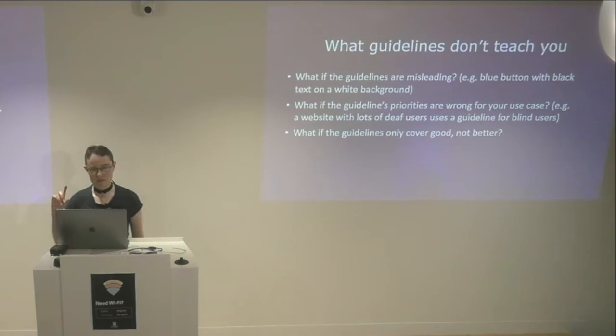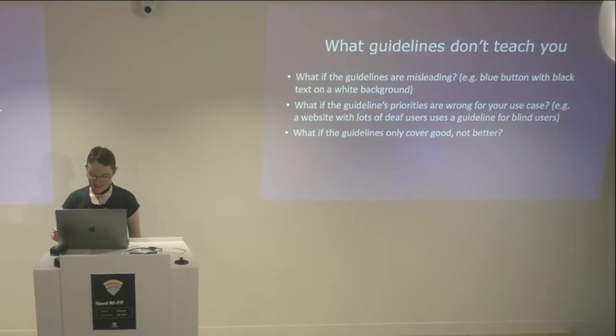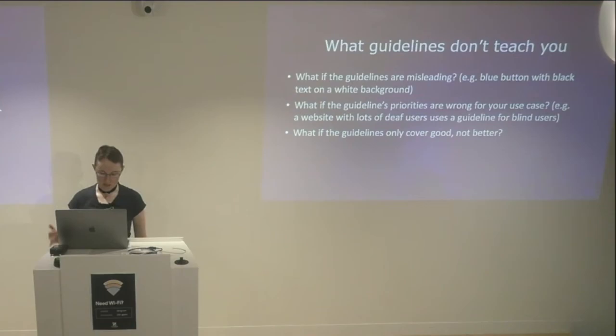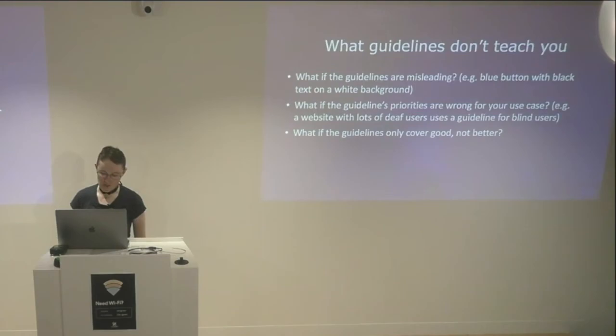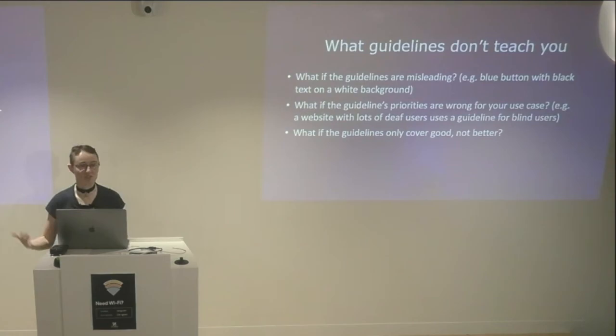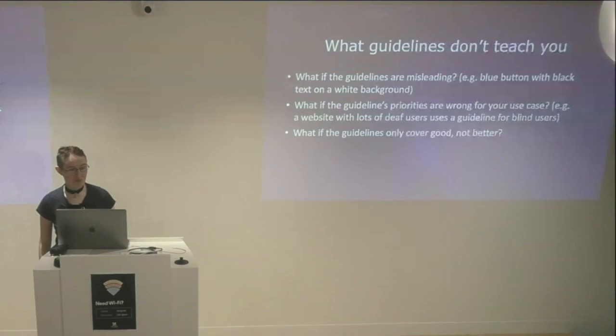What if the guidelines are misleading? One interesting case is the contrast requirement in the Web Content Accessibility Guidelines. If you have a light blue button on a white background with black text, that's going to pass the guidelines, but it's still very, very difficult to see. On the other hand, if you put white text on your light blue button, that's going to fail the guidelines, but it's going to be much easier to see. Someone actually did a study of this with light blue and light orange buttons and found that even though they would fail the content checkers, it was actually better to have white text because people usually couldn't see the black text.